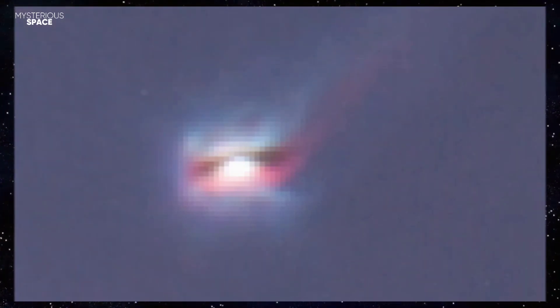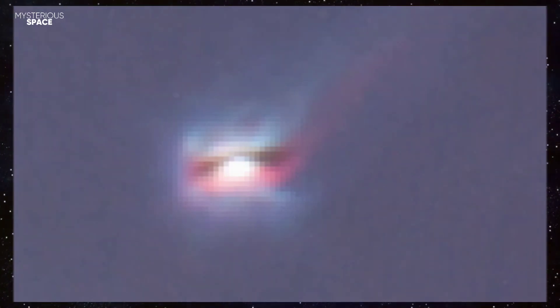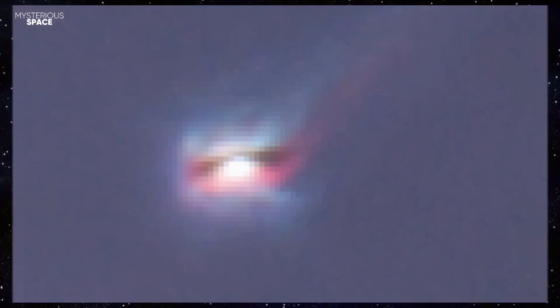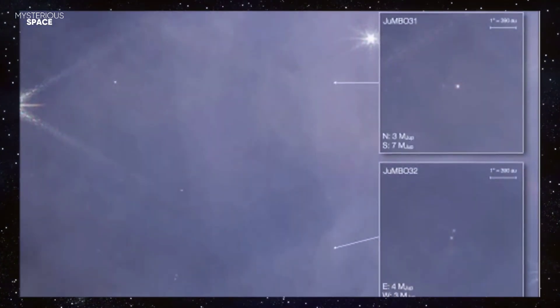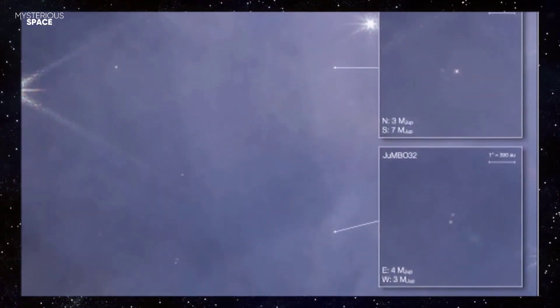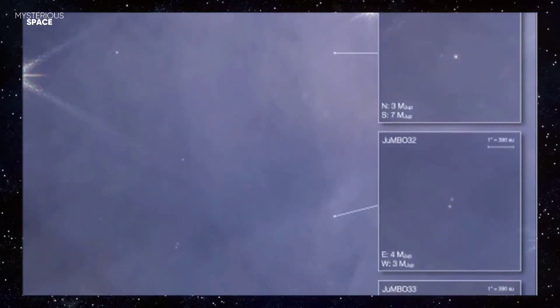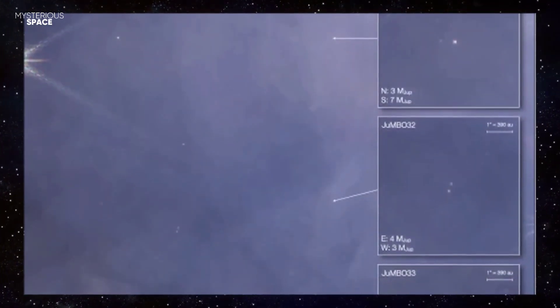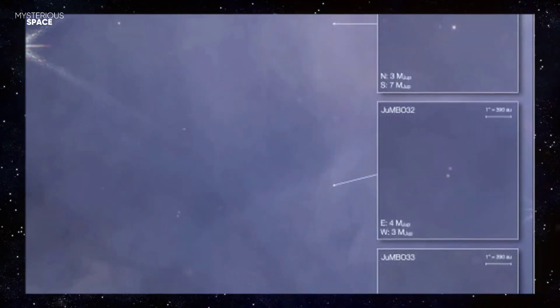Thanks to the James Webb, they are seeing things they couldn't see before. The JUMBOs seem to be a smaller class of gaseous objects because to be a brown dwarf, an object needs to have up to 13 times the mass of Jupiter.